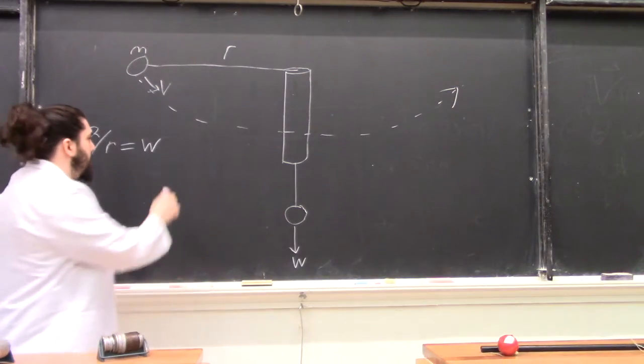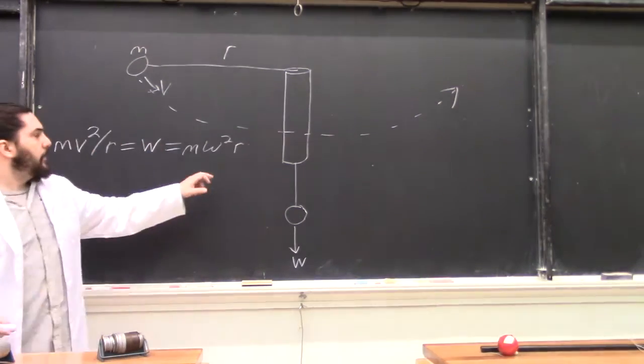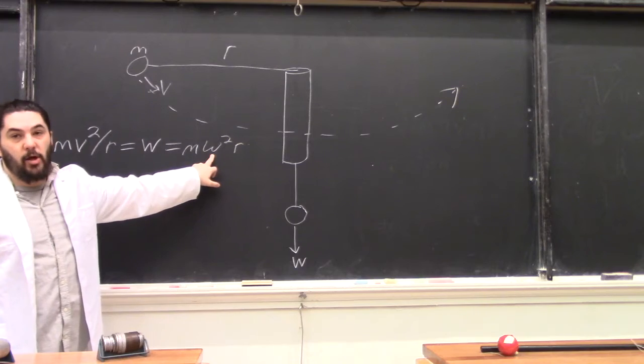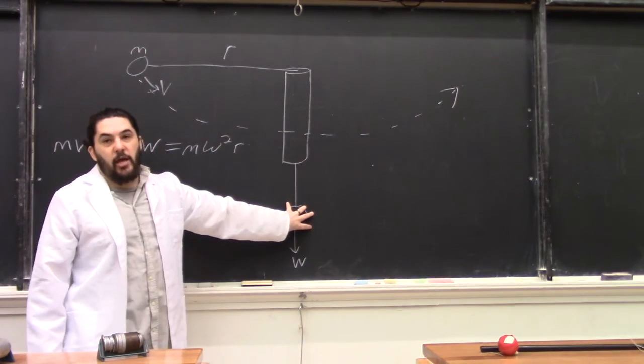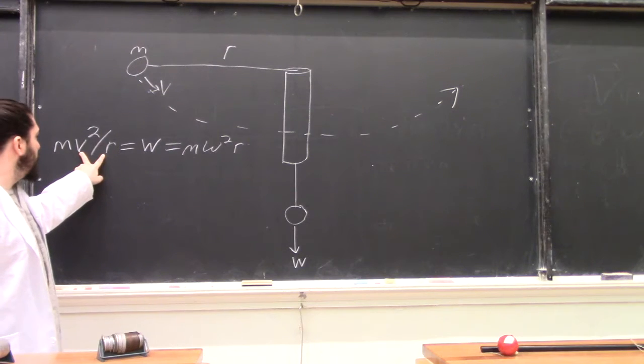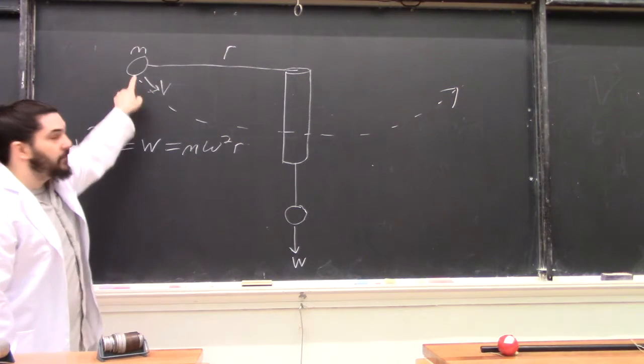And we can also write this using the angular velocity of the ball. Now, the weight of this heavy ball is not going to change, but we can change the radius and velocity of the smaller ball.